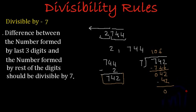If this rule is correct, then 2744 should also be divisible by 7. Since this is a 4-digit number, we can try the normal route to check — we will divide 2744 by 7 and should get 0 as our remainder.